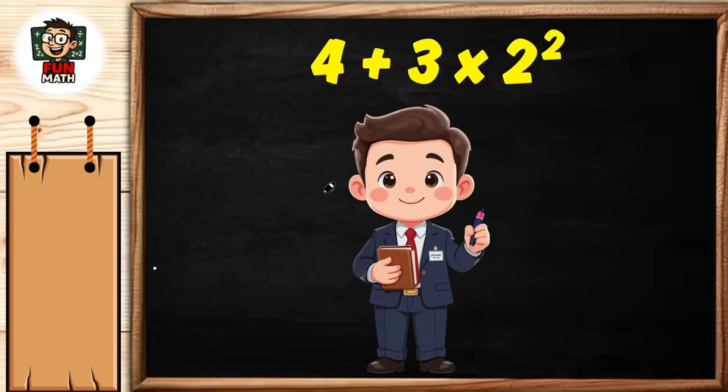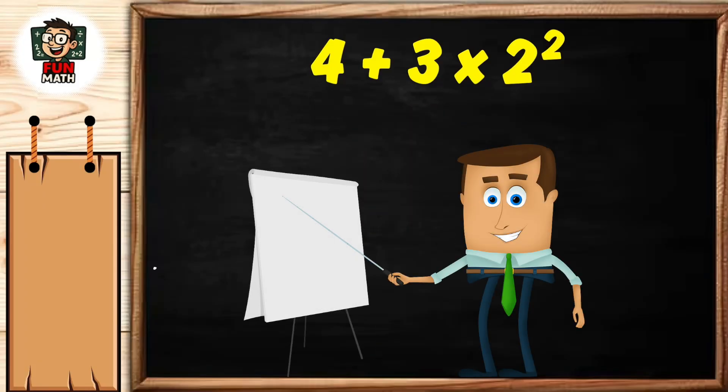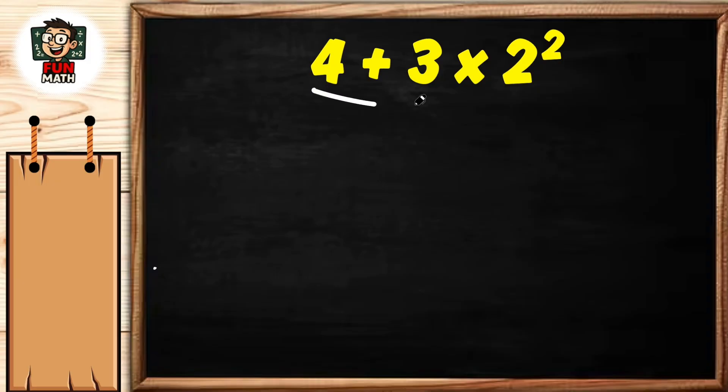Hello everyone, we are back with another good question. Let's take a quick look at our question: 4 plus 3 times 2 to the power of 2. If we solve it incorrectly: 4 plus 3 equals 7, 2 to the power of 2 equals 2 times 2 equals 4, finally multiply 7 times 4.